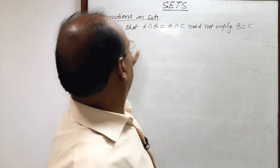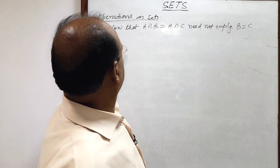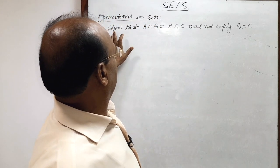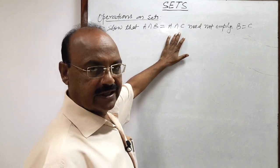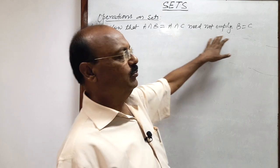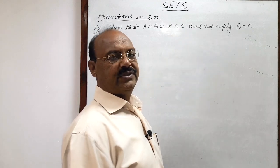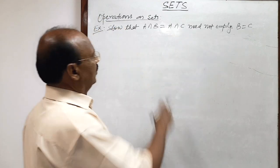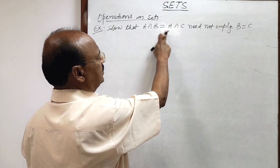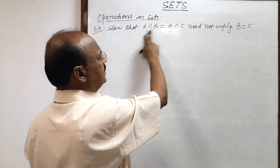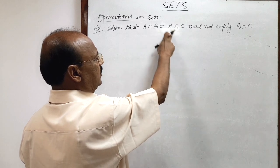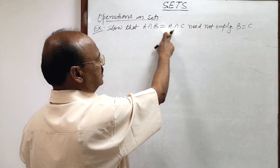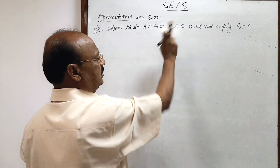Here we have given this question: show that A intersection B is equal to A intersection C need not imply B is equal to C. Look at the equation A intersection B is equal to A intersection C. A is common here in both the sides, left hand side as well as right hand side. So this is not implying B is equal to C.